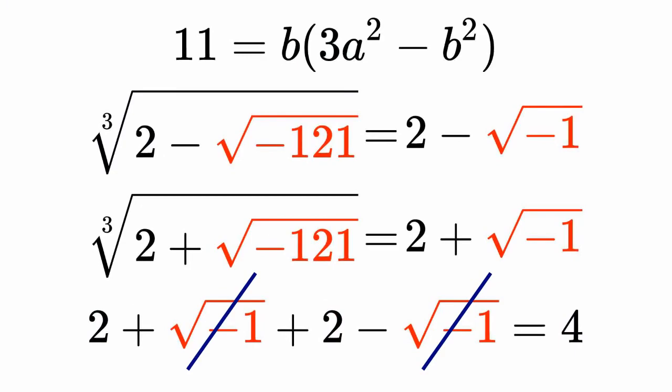However, for the next 200 years, the square root of minus one was treated with suspicion by mathematicians. In the 17th century, René Descartes, the father of the Cartesian coordinate system, completely fed up with the very idea, even gave it a name which summed up what he felt about it: an imaginary number, he called it.